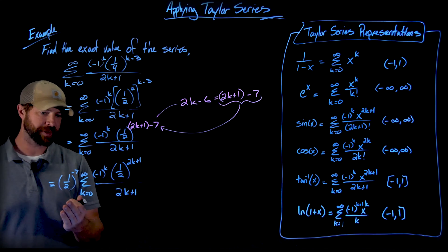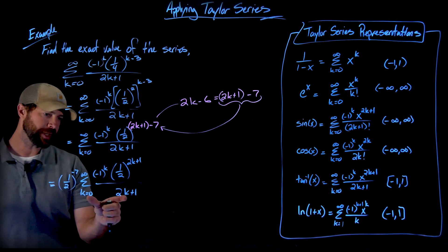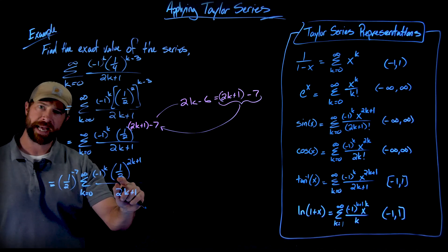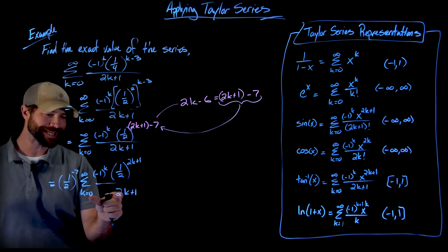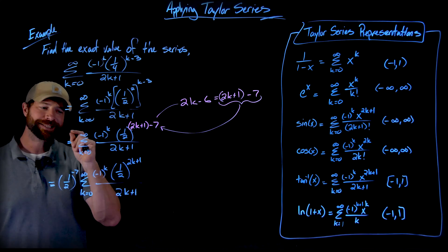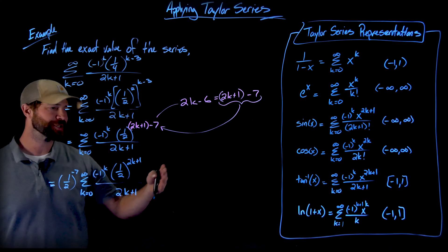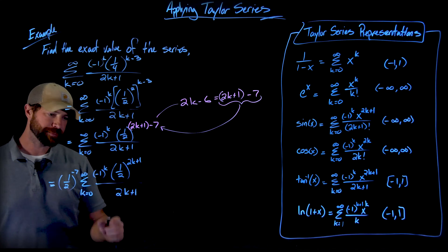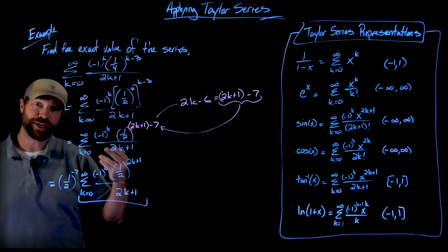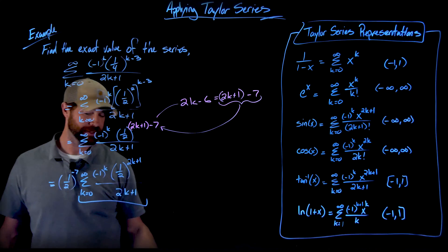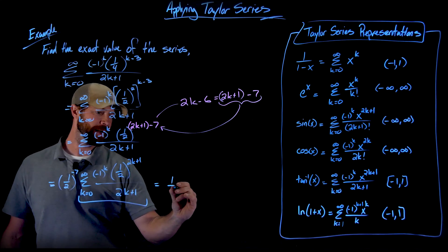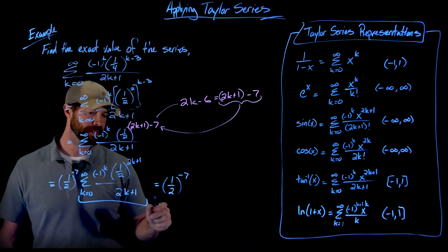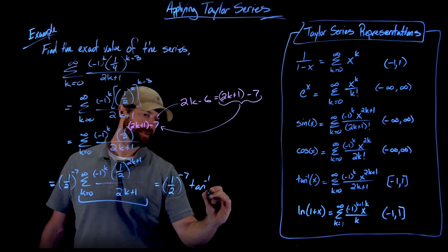Now I'm looking at exactly the arctangent Taylor series with one half plugged in for x. Since one half lies on the interval of convergence from negative one to one, I can represent that remaining sum as arctangent of one half. So the entire original series equals one half to the negative seven times arctangent of one half.